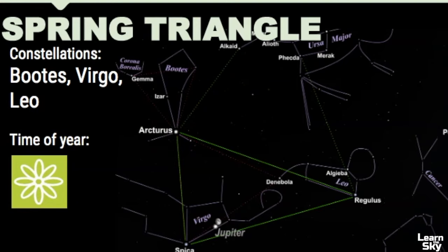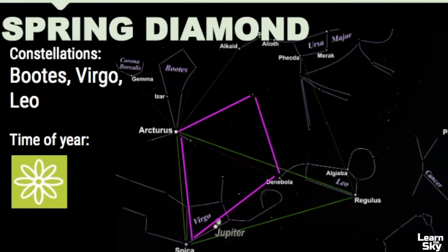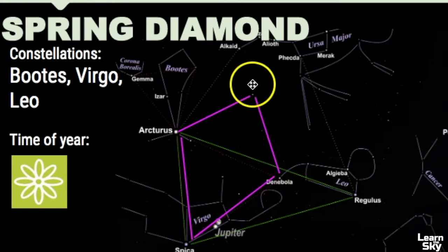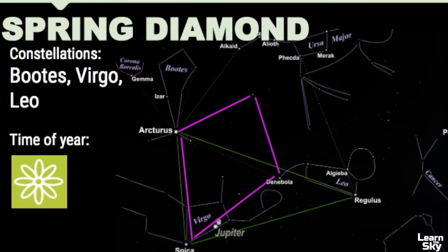I've also seen another version of the spring sky called the Spring Diamond. This connects Arcturus, Spica, Denebola, and Cor Caroli — that's a bright star in Canes Venatici.